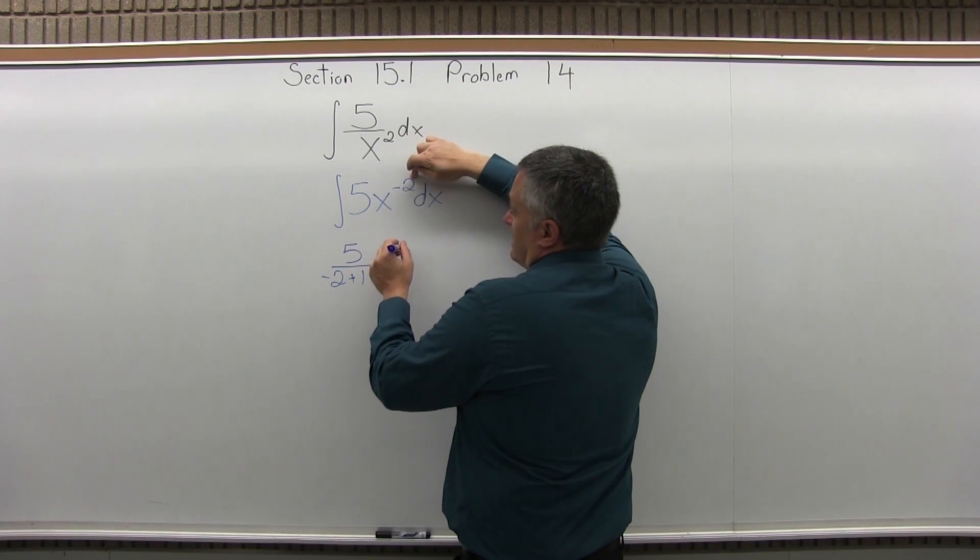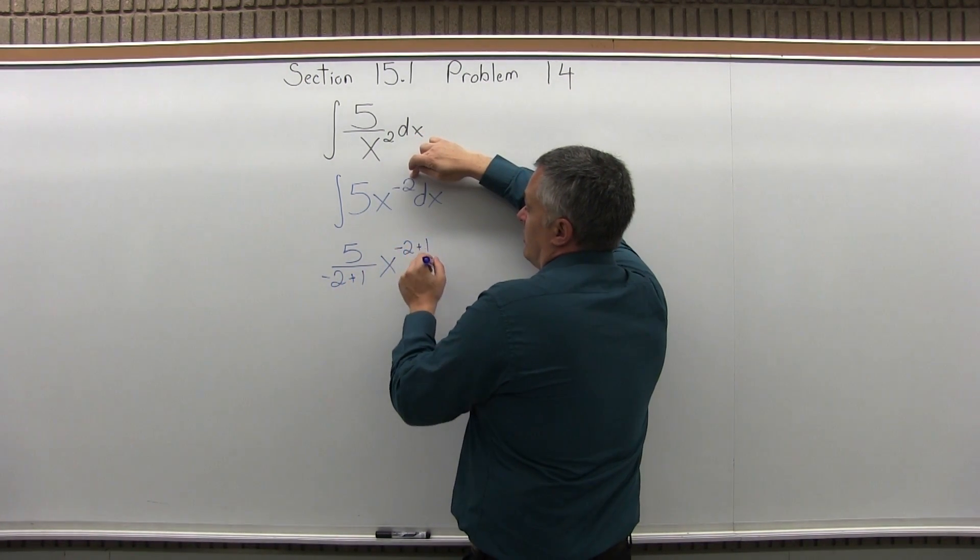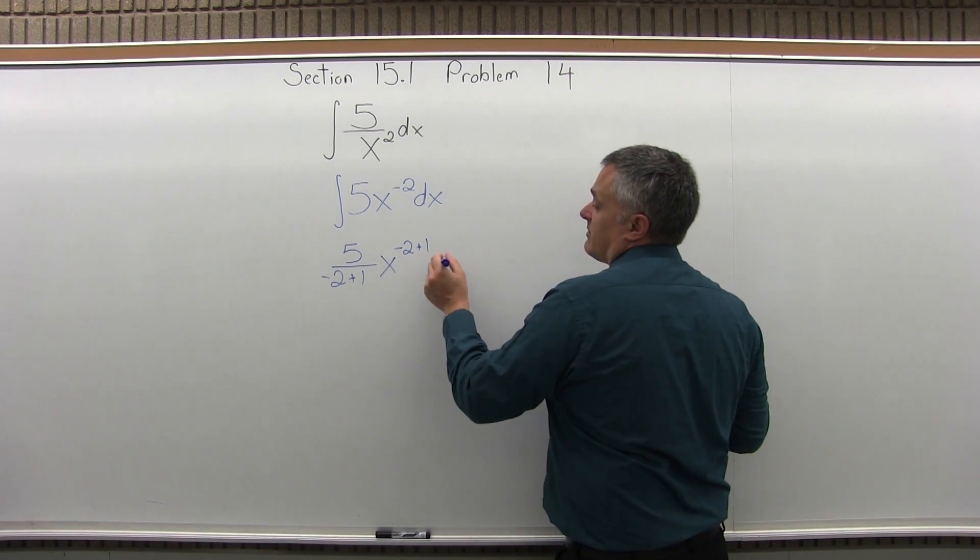And then x to the previous exponent, minus 2, plus 1 more. And then there could have been some type of constant with that.